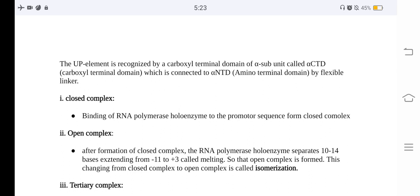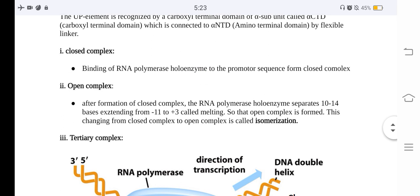Binding of the RNA polymerase holoenzyme to the promoter sequence forms the closed complex. After formation of the closed complex, the RNA polymerase holoenzyme separates 10 to 14 bases, extending from minus 11 to plus 3 — this is called melting — forming the open complex. The change from closed complex to open complex is called isomerization.